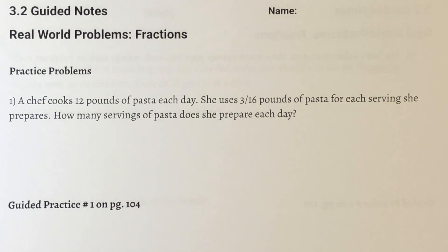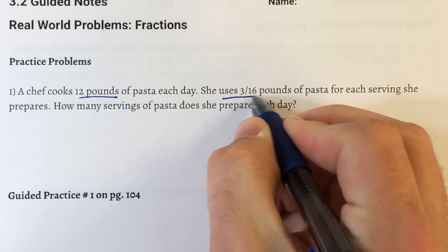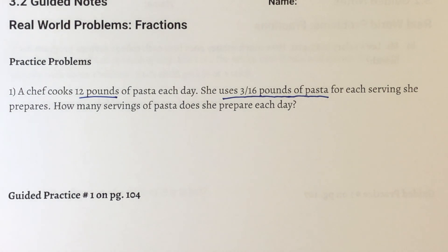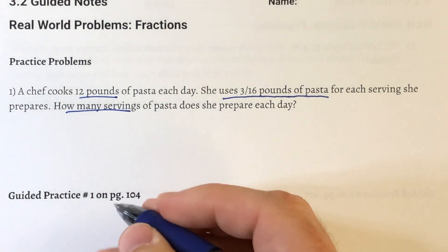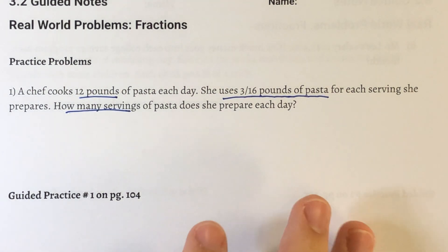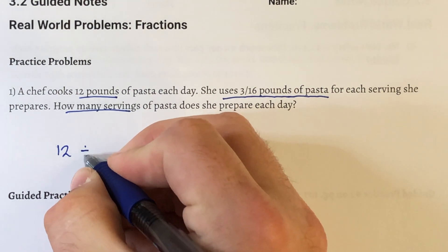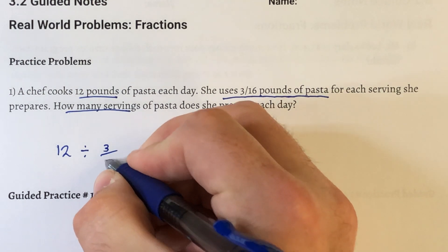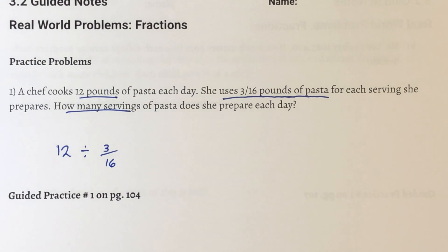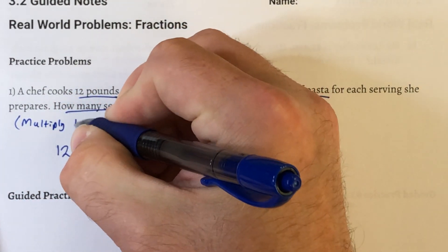Our first example: a chef cooks 12 pounds of pasta each day. She uses 3/16 pounds of pasta for each serving she prepares. How many servings of pasta does she prepare each day? We are thinking about what we have and what we are dividing it up into. The chef has 12 pounds of pasta and is going to divide it into individual servings of 3/16 pounds. So our problem is 12 divided by 3/16. We are not actually going to divide fractions — we are going to instead multiply by the reciprocal.